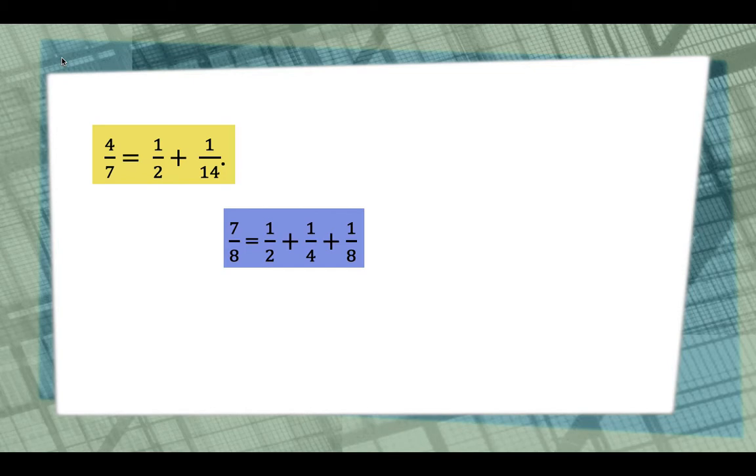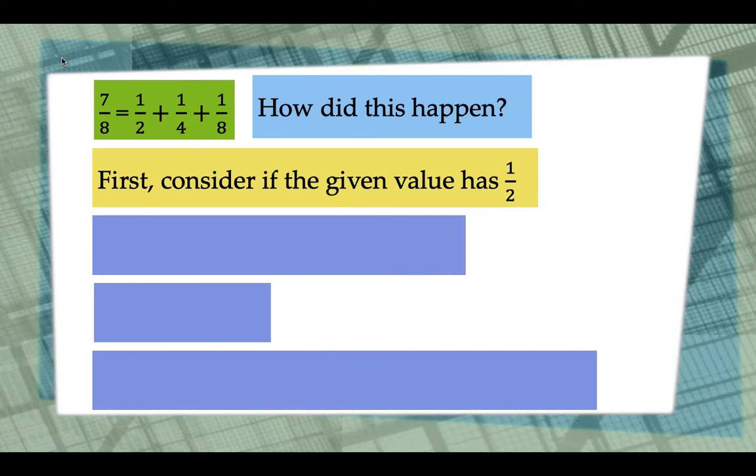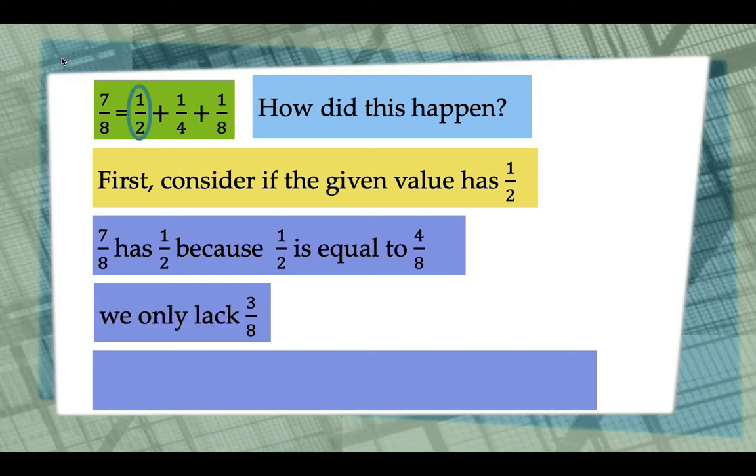How did this happen? First, consider if the given value has 1/2. Then start from it. So, 7/8 has 1/2 because 1/2 is equal to 4/8. We only lack 3/8.